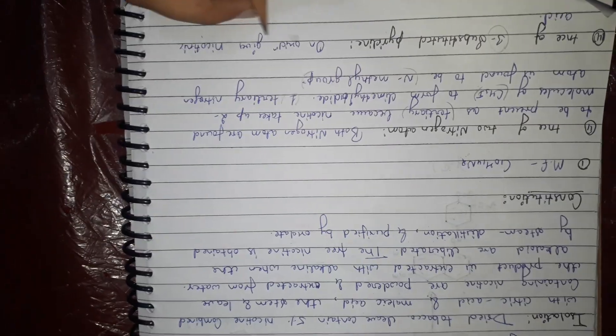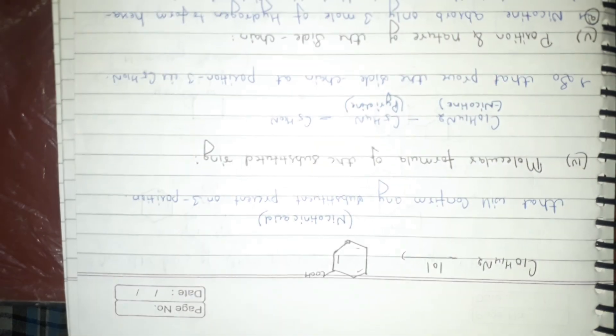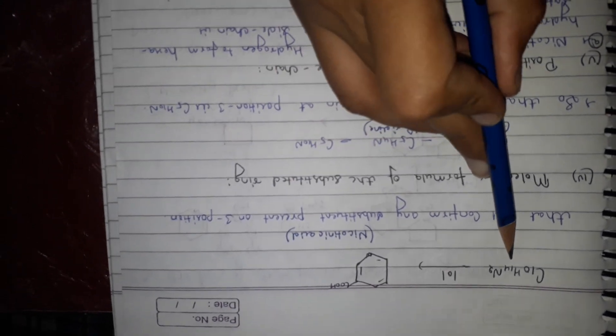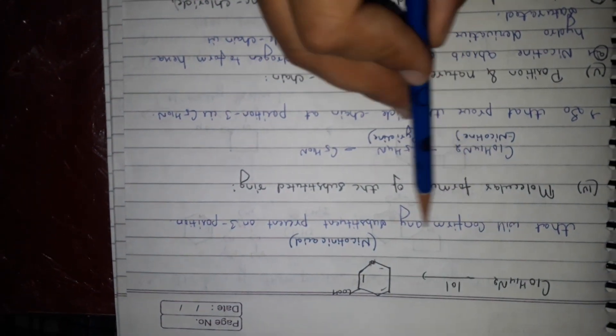Presence of three substitution pyridine - on oxidation gives nicotinic acid. C10H14N2 yields nicotinic acid. That confirms the substitution present on third position.